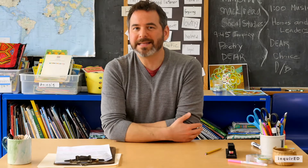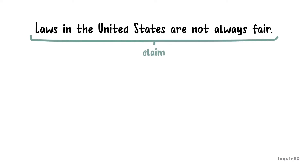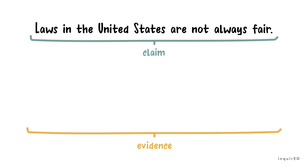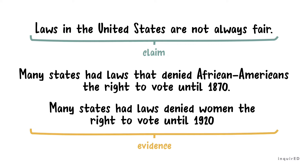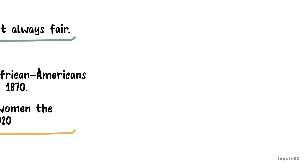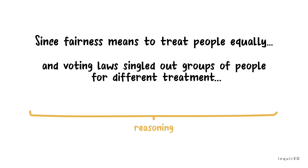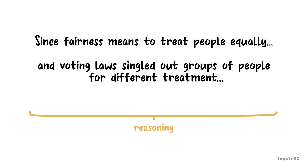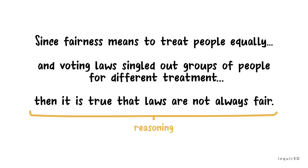Let's look at an example. 'Laws in the United States are not always fair.' That's our claim. What's our evidence? First, many states had laws that denied African Americans the right to vote until 1870. Second, many states had laws that denied women the right to vote until 1920. And now our reasoning: since fairness means to treat people equally, and voting laws singled out groups of people for different treatment, then it is true that laws are not always fair.